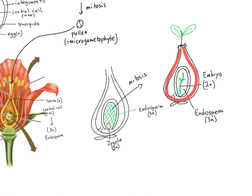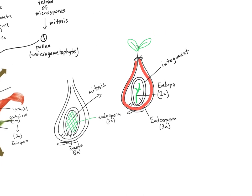Keep in mind that the seed is still surrounded by the integument layers. So the combination of the integument, the embryo, and the endosperm together are what we refer to as the seed.